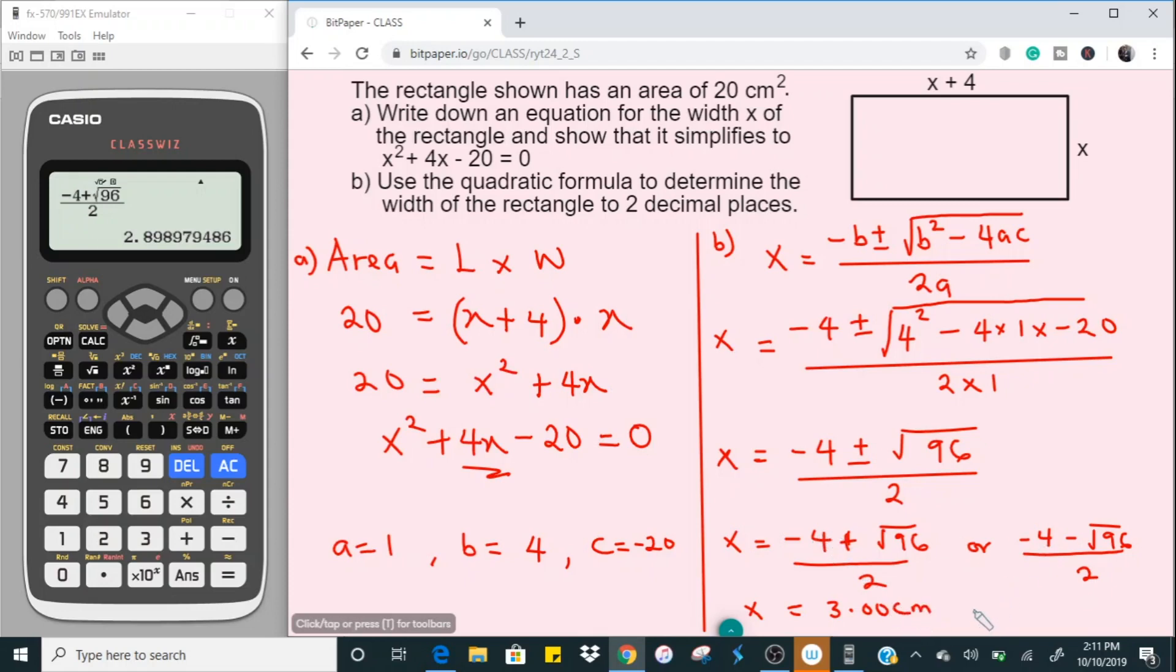And let's try to work out the other value for this. So we have minus 4 minus square root of 96, and then divide that by 2. Well, you can see we got a negative value there, minus 6.898.